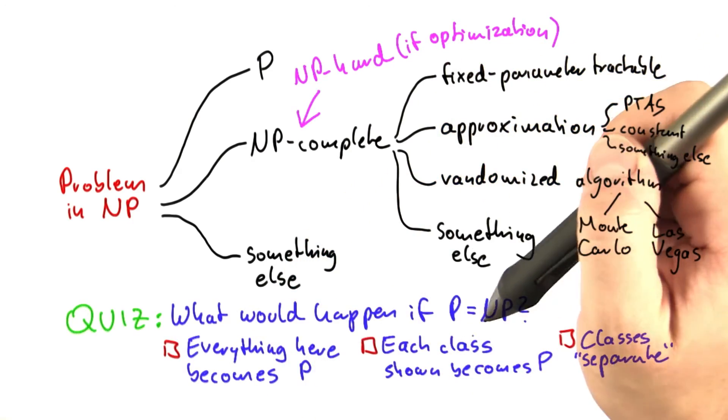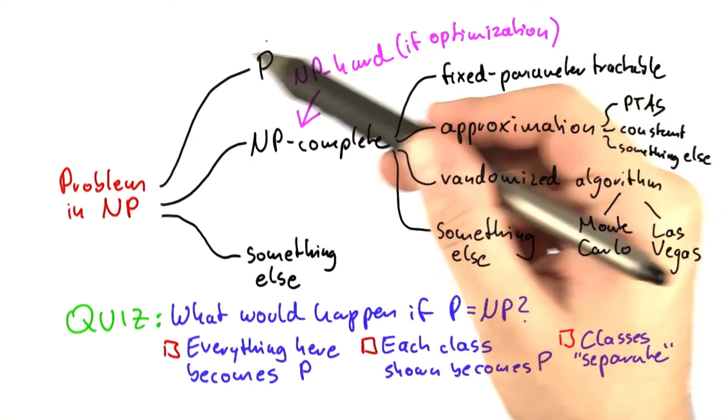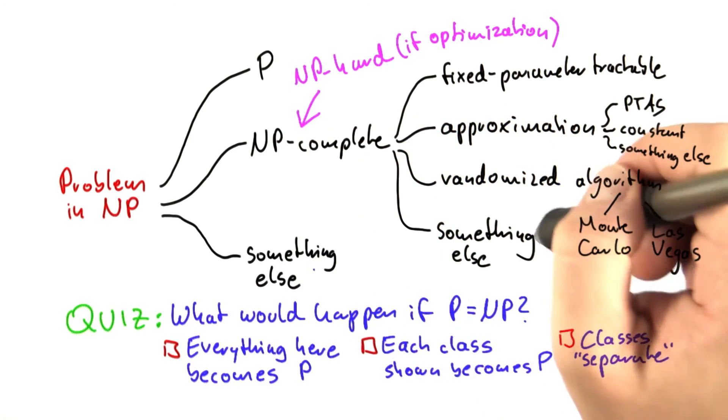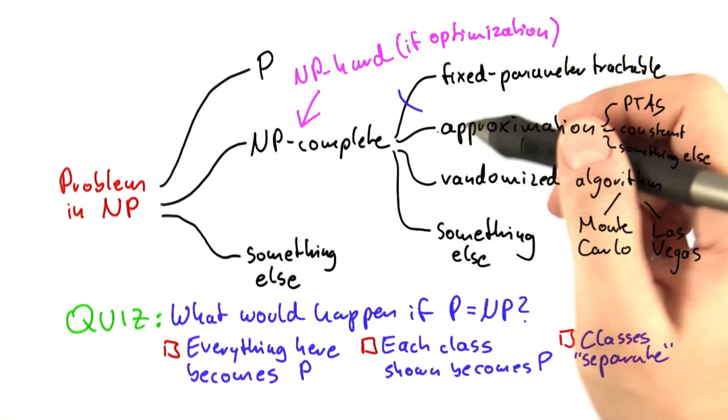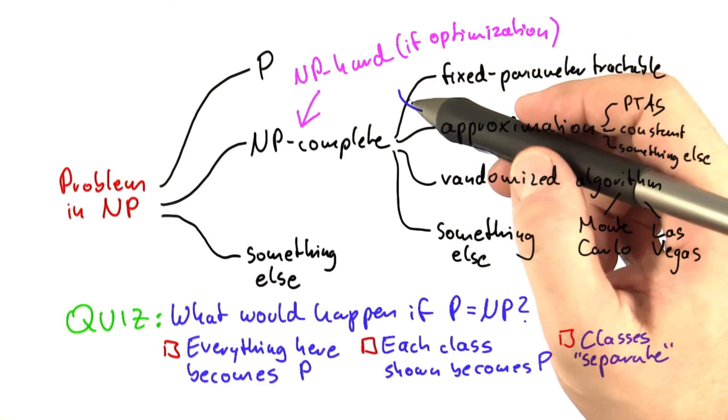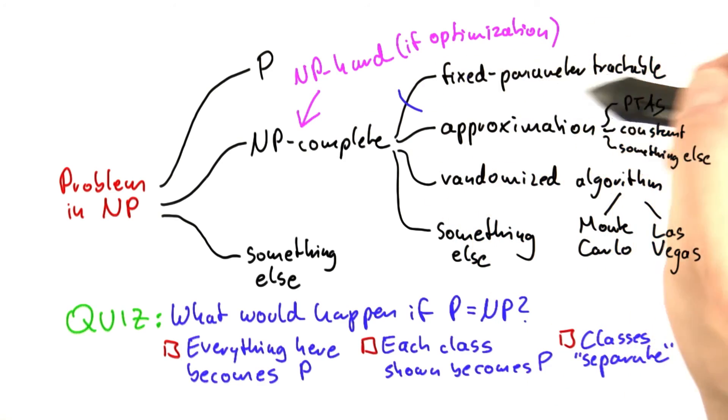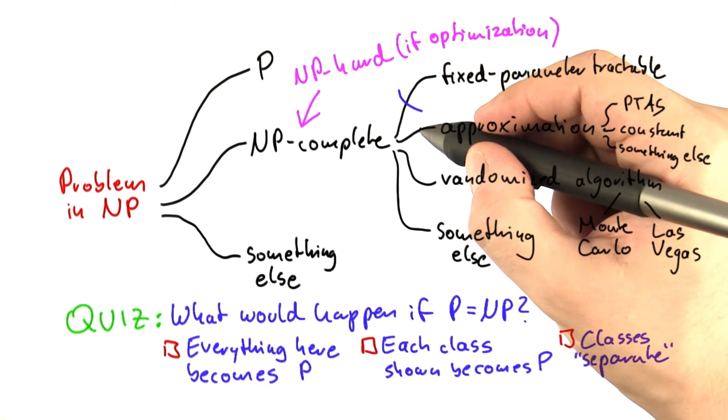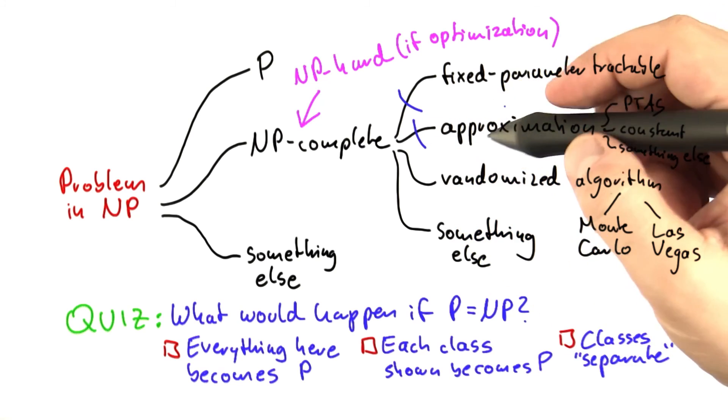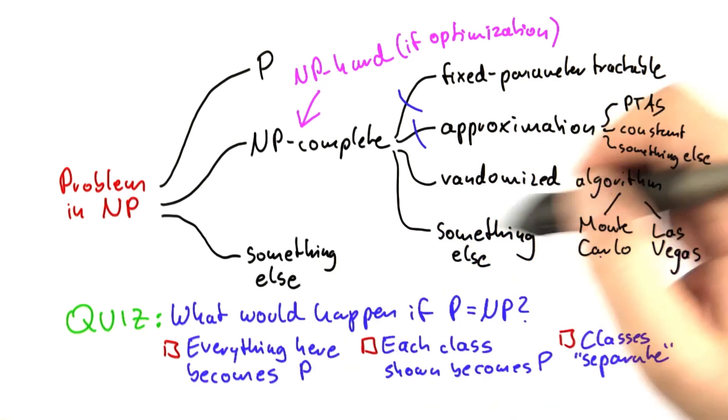What would happen if we were able to show that P equals NP? Would then each single class we have shown here become P? Or would the classes separate? And what I mean by this is, could we then show that not every NP complete problem is fixed parameter tractable, or not every NP complete problem has an approximation algorithm? And more than one of these here can be correct.